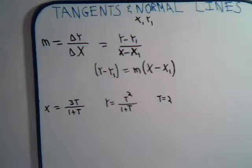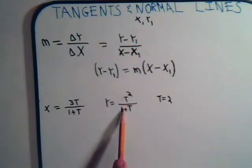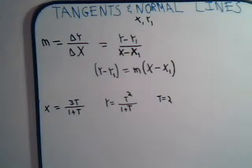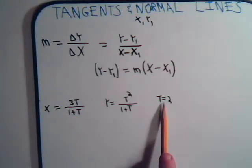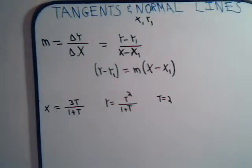The curve in question is x equals 3t divided by 1 plus t, and y equals t squared divided by 1 plus t. When t equals 2, we want to know what would be the equation of a tangent line that would be tangent to the curve at that point where t equals 2.